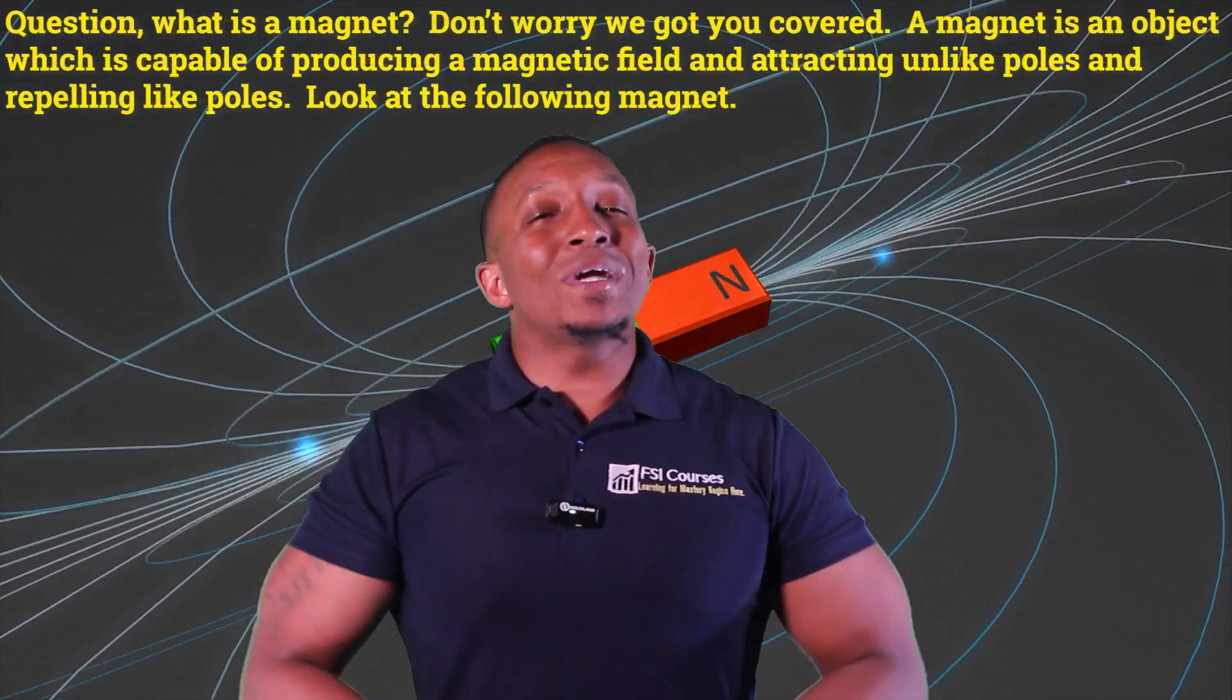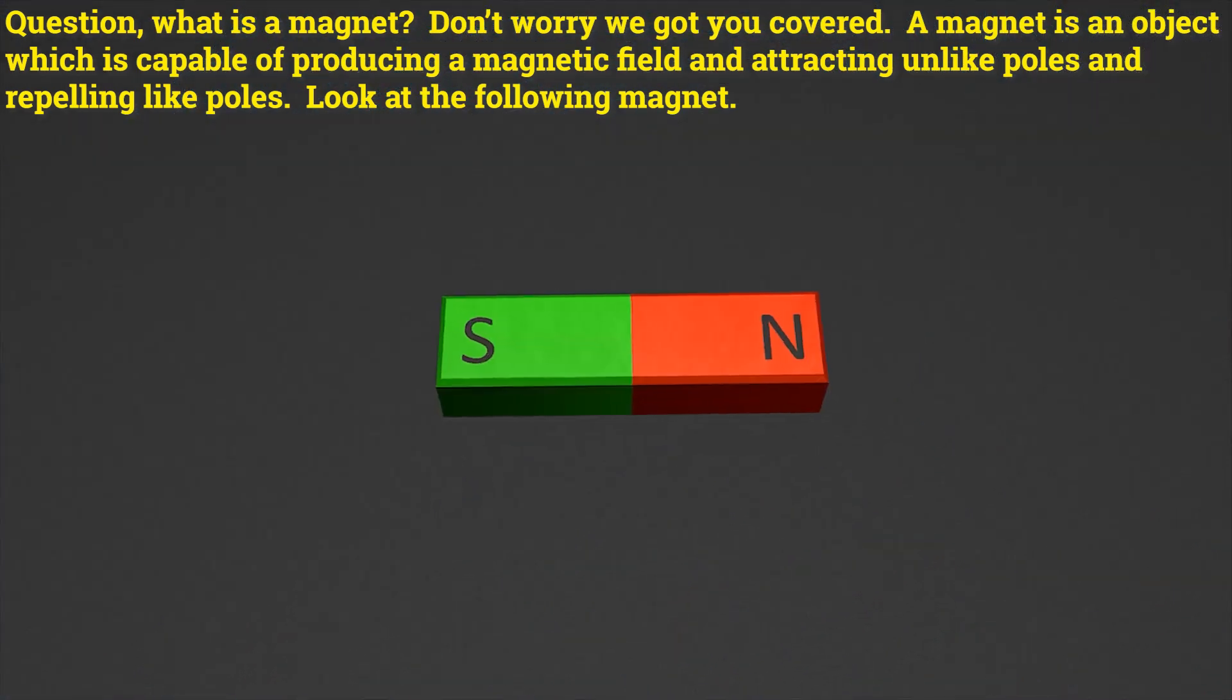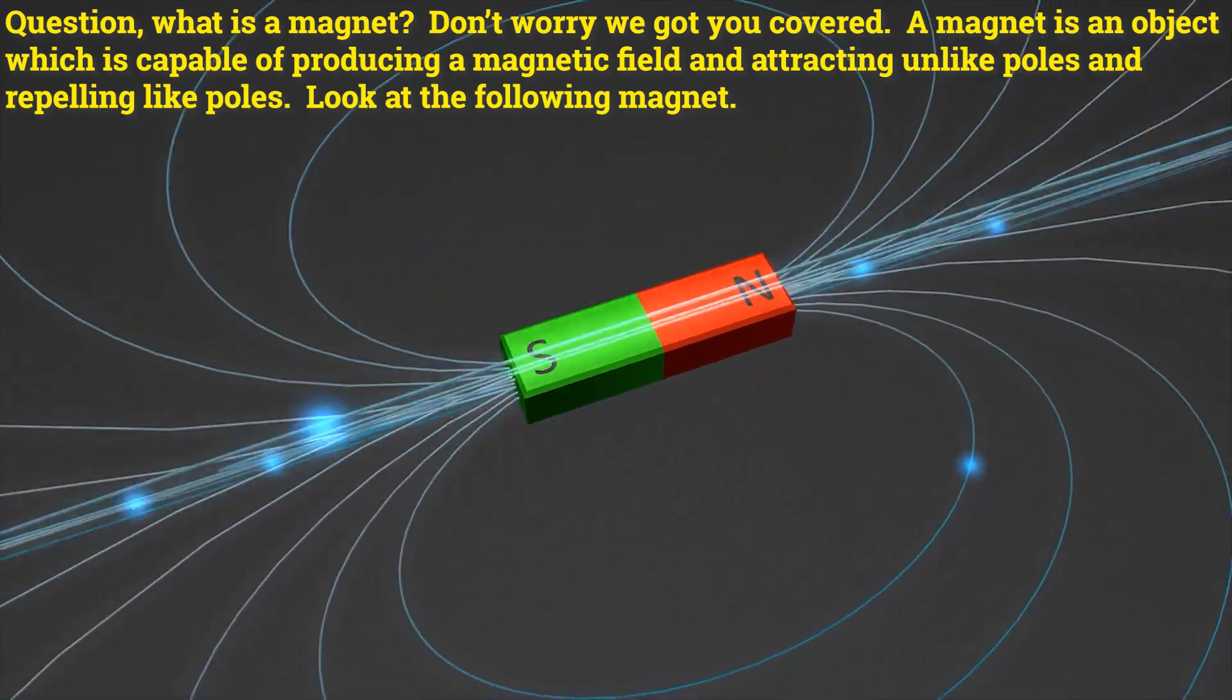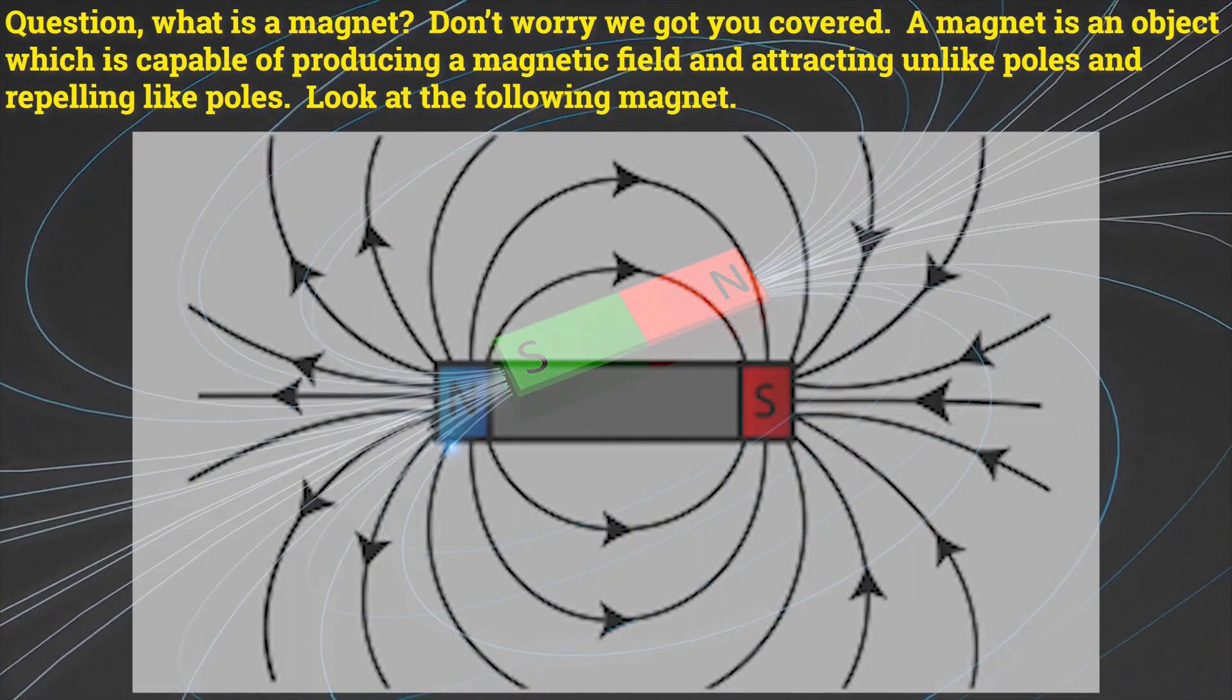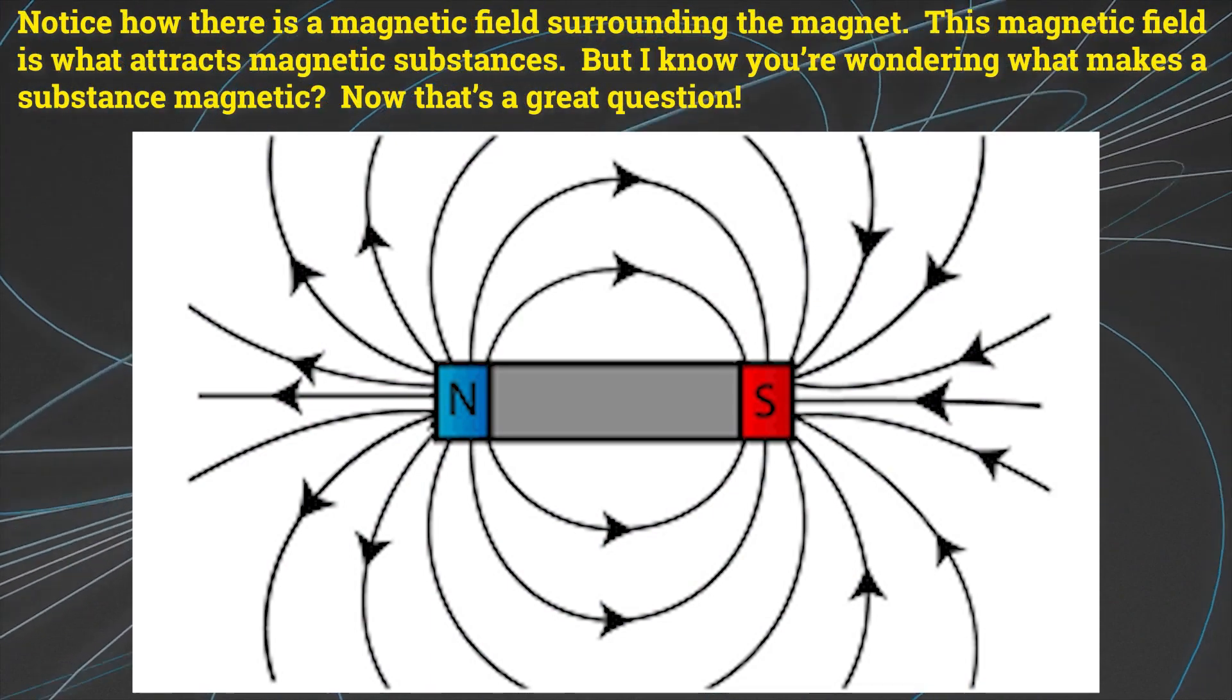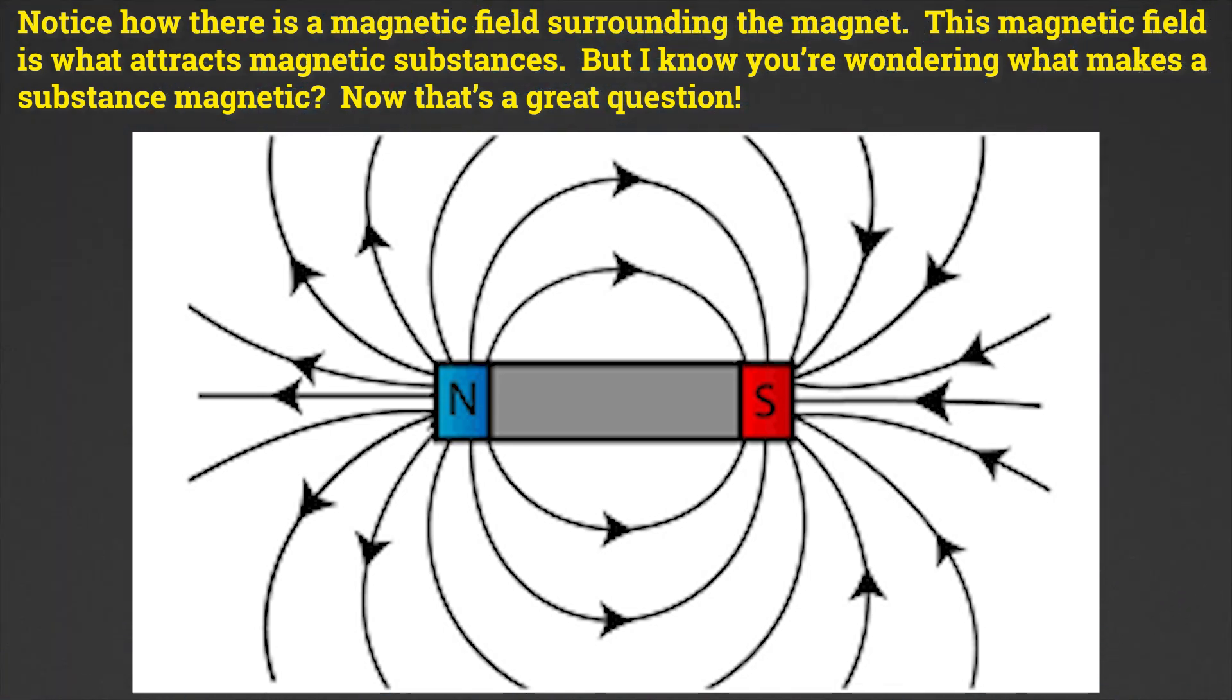Question, what is a magnet? Don't worry, we got you covered. A magnet is an object which is capable of producing a magnetic field and attracting unlike poles and repelling like poles. Look at the following magnet. Notice how there is a magnetic field surrounding the magnet. This magnetic field is what attracts magnetic substances.